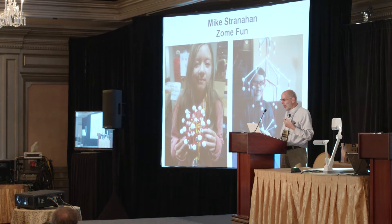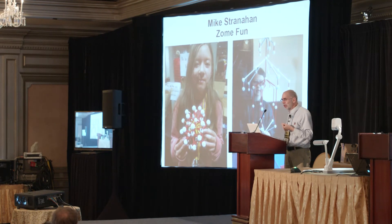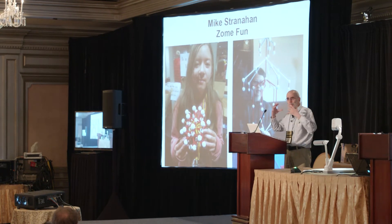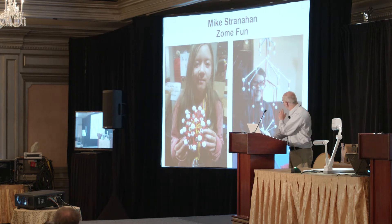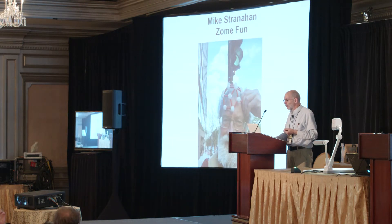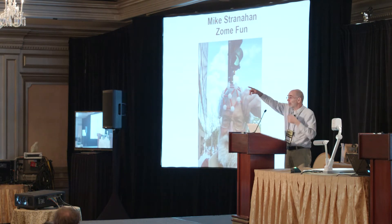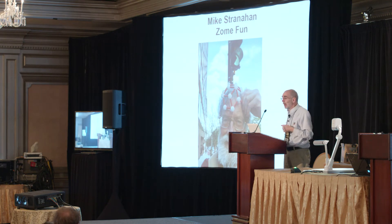At the end of the alphabet we have two Zometool activities. The first is open-ended: you can make whatever you like from a pile of Zometool pieces. Mike Stranahan — the person with the Zometool hat standing over there — will be at that table.